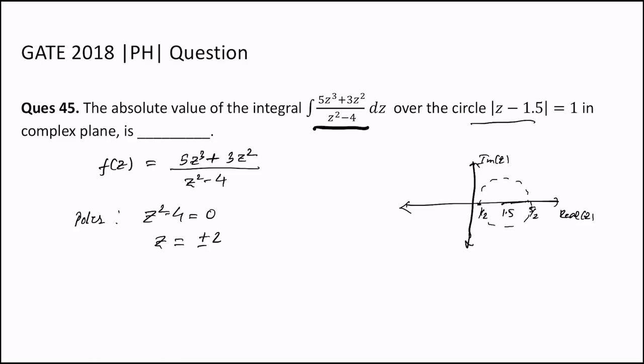We know by Cauchy's residue theorem that any integral of f(z)dz around a contour can be represented by the formula 2πi times the sum of the residues.